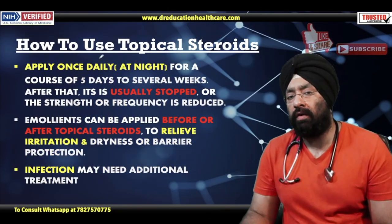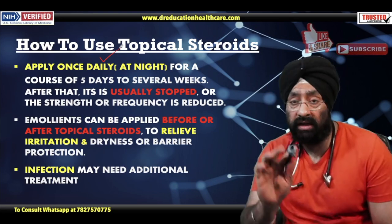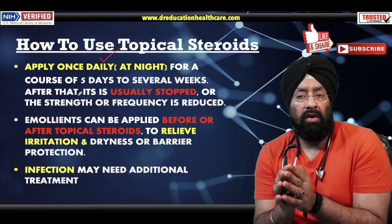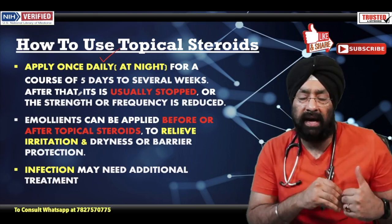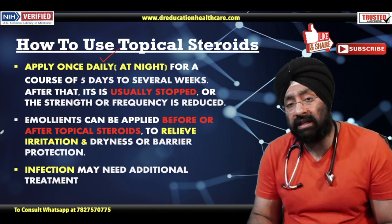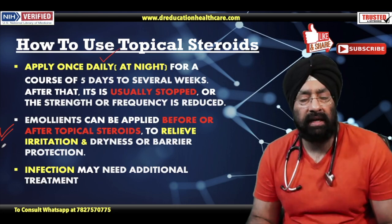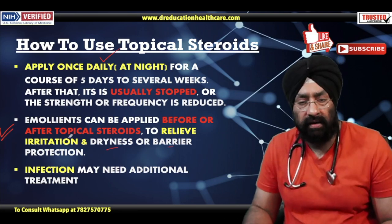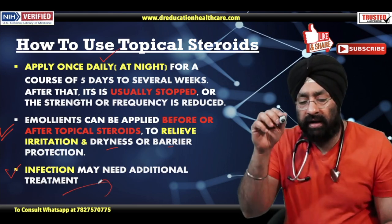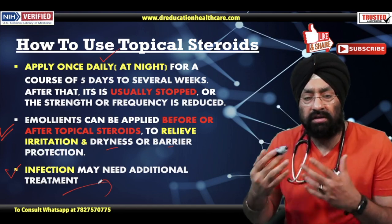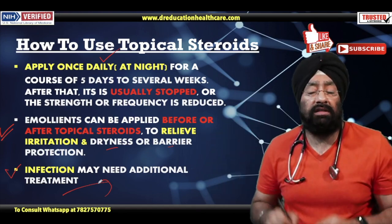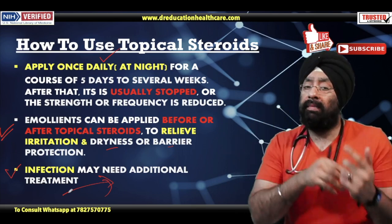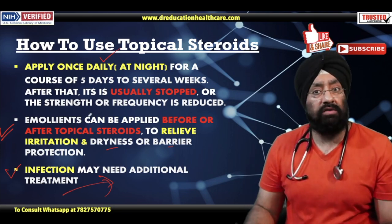Ab lagana kaise hai — apply once daily, only raat mein lagayein ya to doctor ne aapko samjhaya toh theek hai. Nahin toh sirf 5 din se lekar kuch hafton tak laga sakte hain, uske baad band kiya jaata hai ya phir uski strength par aaya jaata hai. Emollient — koi moisturizer type cheez — aap laga sakte hain agar irritation ho raha ho. Emollient can be applied before and after topical steroid taaki irritation, dryness se barrier protection ho sake. Infections — kyunki steroid inflammation kam karega aur body ka immune system ko wahan suppress karega — toh opportunistic infections chamdi mein ho sakte hain. Isliye kai log steroid plus antibiotic cream mix karke dete hain, aur hamesha lete hain — toh bacteria resistant ho jayenge aur phir usse bhi theek nahi honge. Isliye yeh do-dhari talwar hai, soch samajh kar karna padta hai.